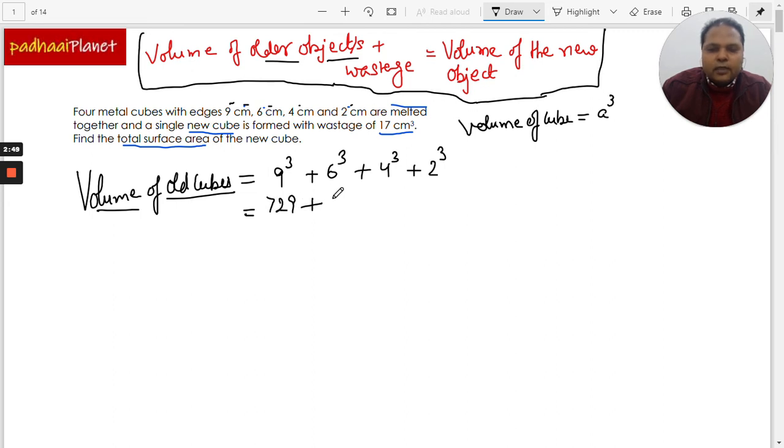And this is like 9 cube is 729 plus 216 plus 64 plus 8. So the total comes is 1017 cubic centimeters. So this is how we've got the volume of the older objects, the sum of the volume of the older objects.